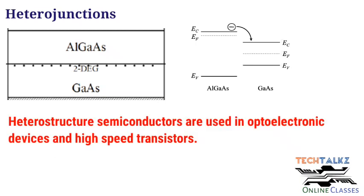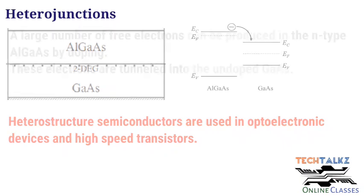These heterojunctions are used in optoelectronic devices like lasers, modulators, etc. We will study the working principle of these heterojunction lasers in the last modules.